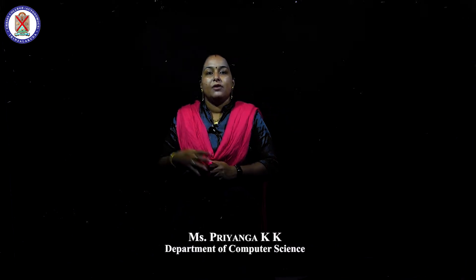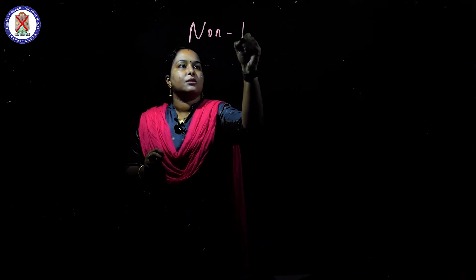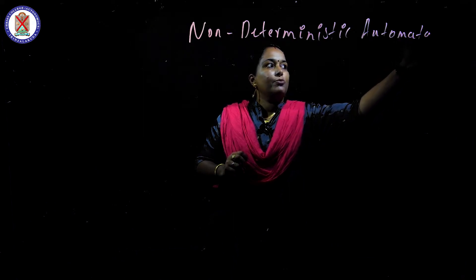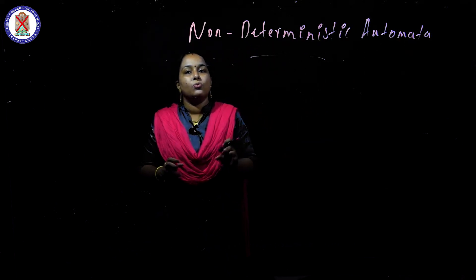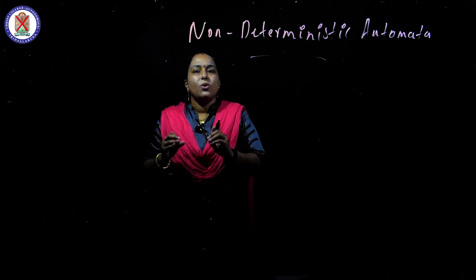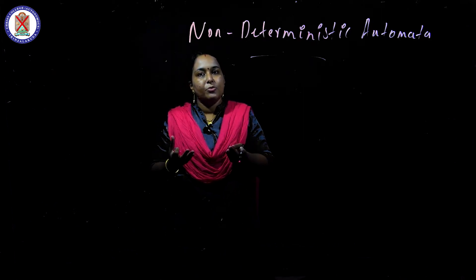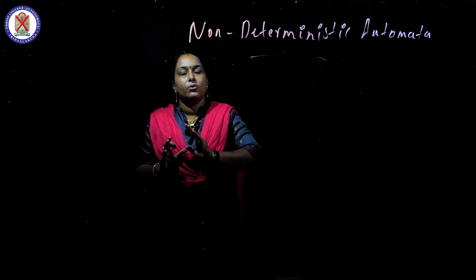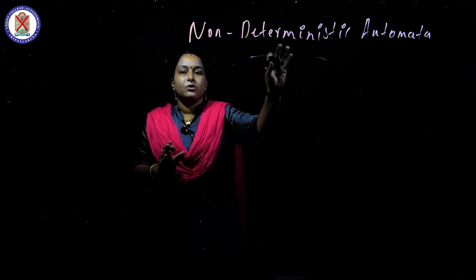Hi everyone, myself Priyanka. We have already discussed deterministic finite automata, where every state must have a transition for every input symbol. Now we are going to discuss non-deterministic automata. In non-determinism, there is no strict rule - a state having no input is also accepted. Every state can move in any direction; there is no particular rule.